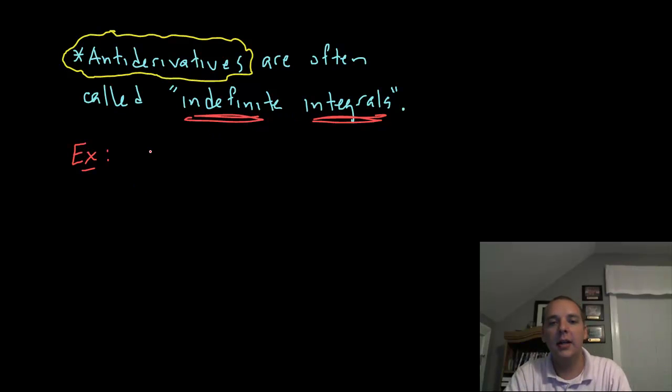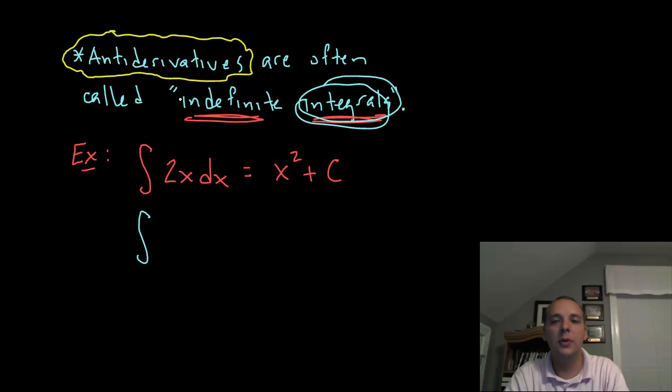Let's put it all together. We could say the integral or indefinite integral of 2x dx, which is like saying informally the antiderivative of 2x, would be x squared plus c. That would be an example. Another example, the integral, let's get comfortable using this word instead of antiderivative, the integral of cosine x dx. What function when you take its derivative would give you cosine? The answer is sine x plus c.